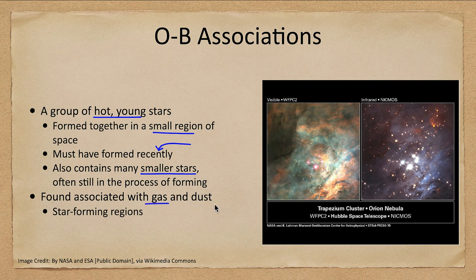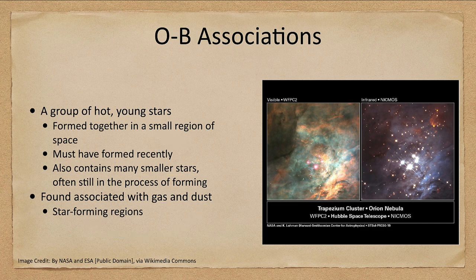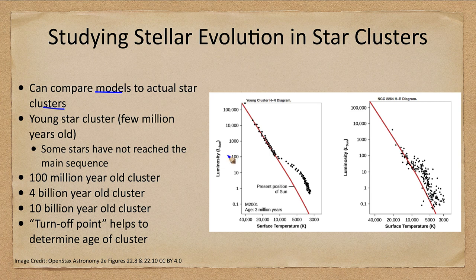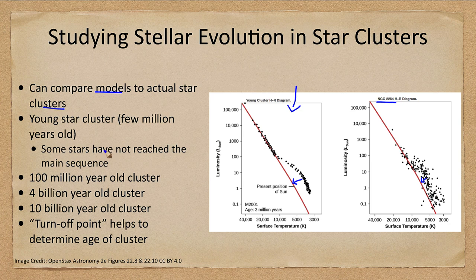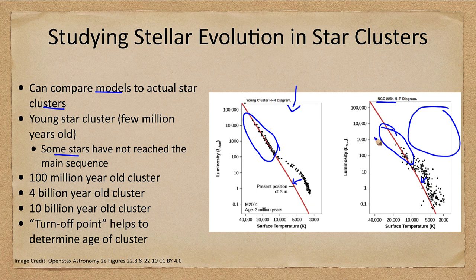The trapezium star cluster in Orion is an example of an OB association, generally associated with gas and dust left over from star formation, which in this case is still ongoing. To study stellar evolution using star clusters, we compare models to actual observations. Here we have a model of a three million year old star cluster and actual observations from NGC 2264. Many of those stars are still approaching the main sequence; lower mass stars take longer to form. The upper mass stars are still on the main sequence and no red giant stars are visible because they have not yet formed.